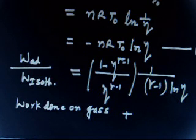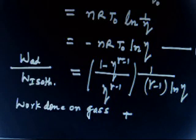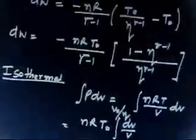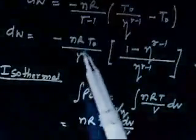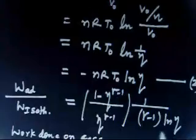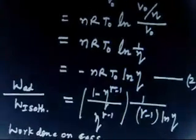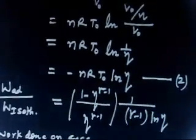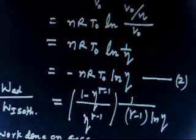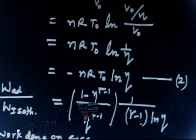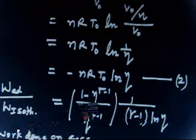This is a straightforward problem. Work done in an isothermal process is nRT·ln(V₂/V₁), and I expressed the adiabatic work in terms of temperature so that T₀ cancels cleanly in the ratio. We'll move on to the next problem.